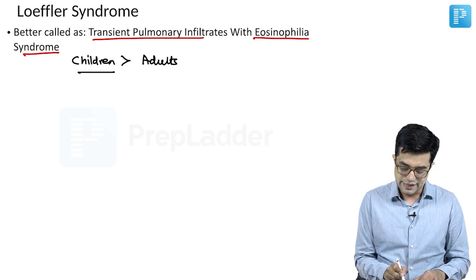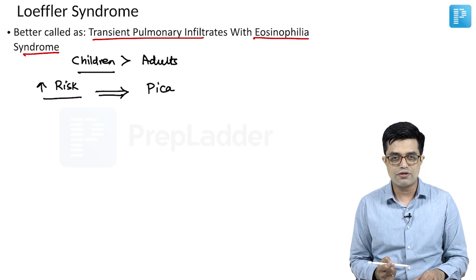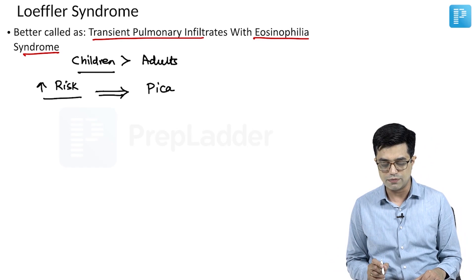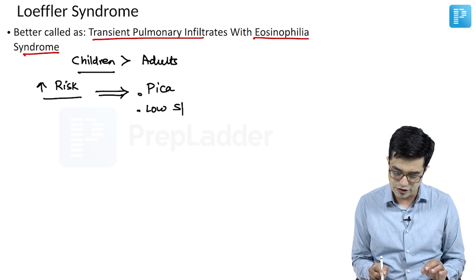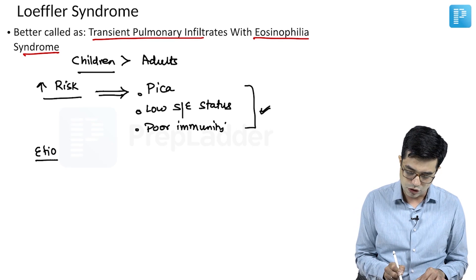Increased risk of Loeffler syndrome is seen in some particular categories. First, children who show pica — that is, they have a history of ingestion of non-edible substances like mud, clay, etc. — will also ingest fertilized eggs of various nematodes, and that can cause Loeffler syndrome. History of pica is a strong risk factor. Low socioeconomic status and poor immunity are the other risk factors in which Loeffler syndrome tends to be more common.